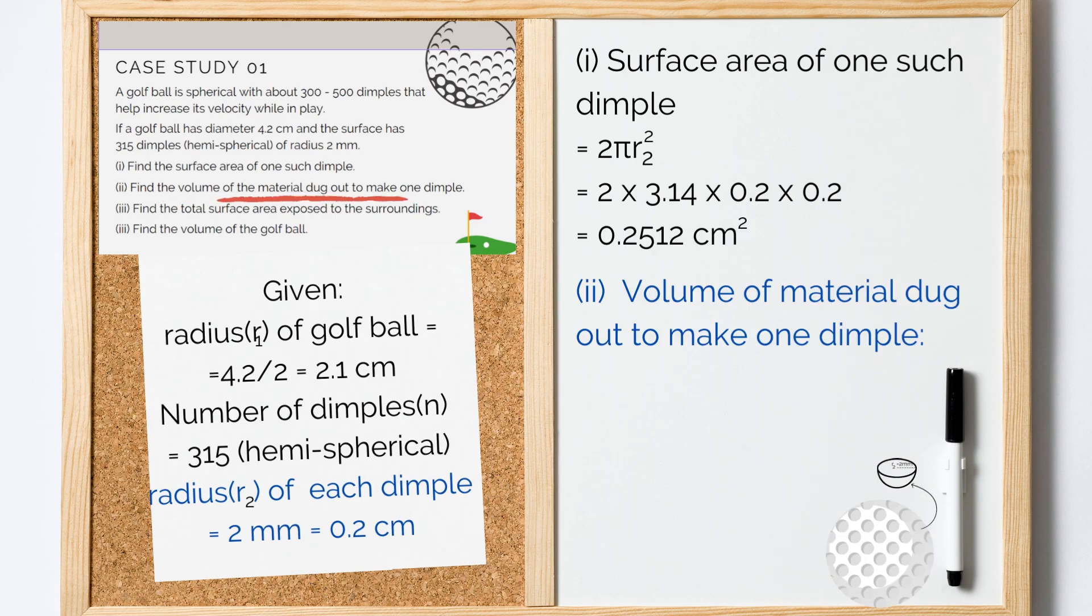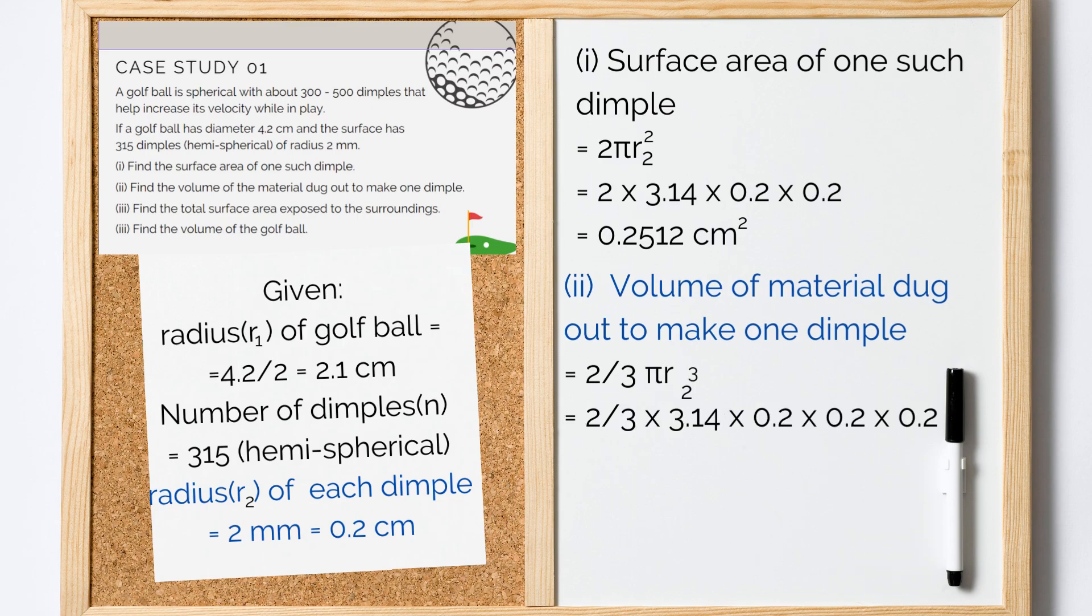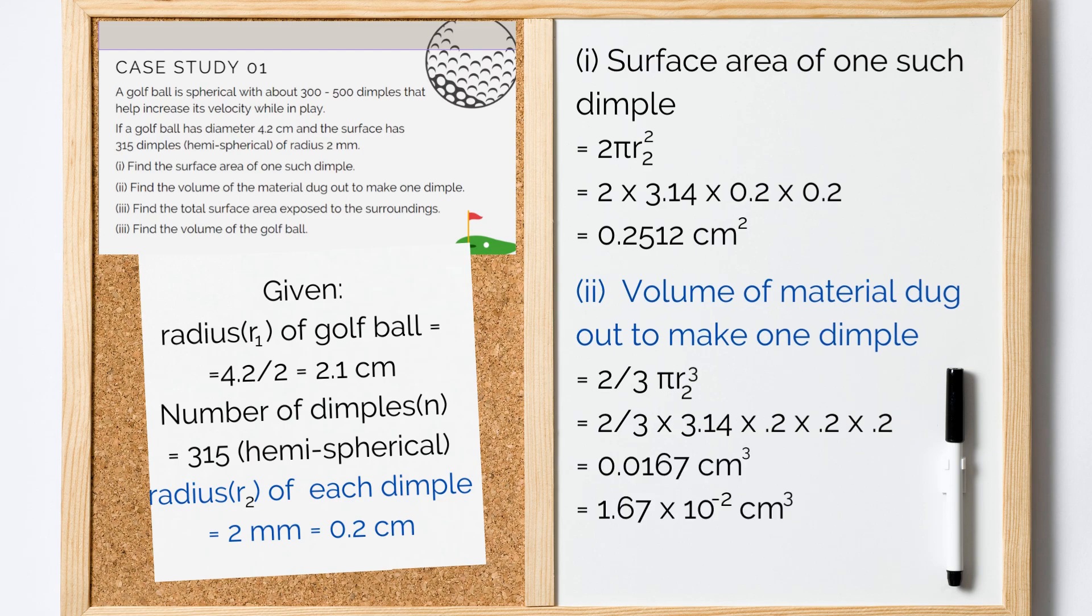Now, volume of the material dugout to make one dimple. It would be volume of the hemisphere which is 2/3 πR2³. Now, substituting given values we get volume equal to 0.0167 cm³. Pretty simple till now, right?